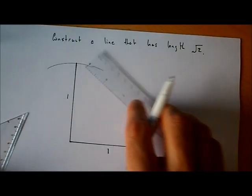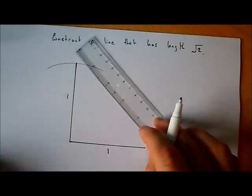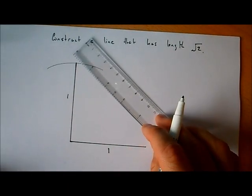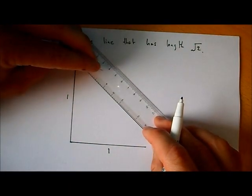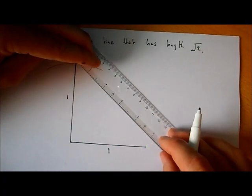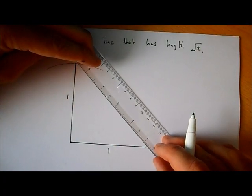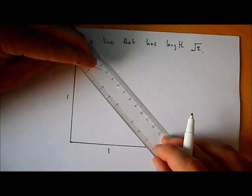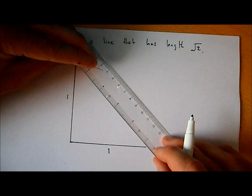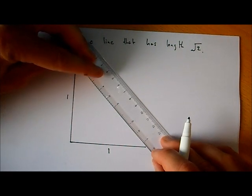Now all we have to do is join the two corners, the two edges. We just join this to this, and the new line will have length the square root of 2.